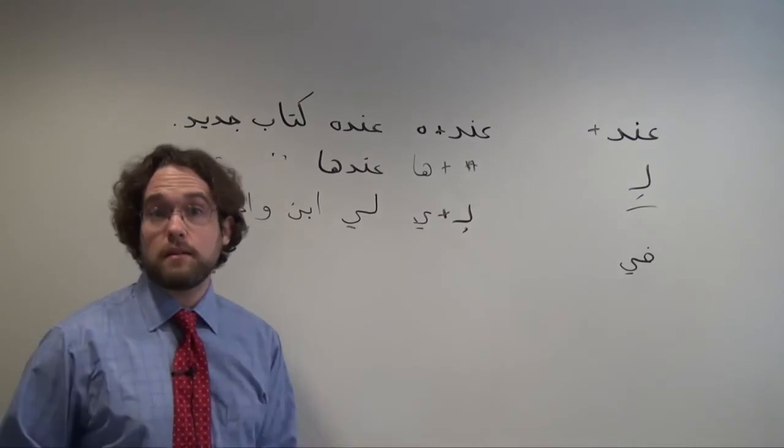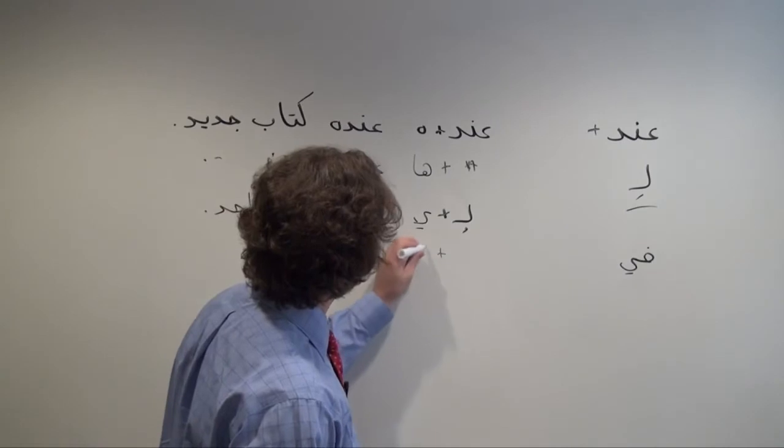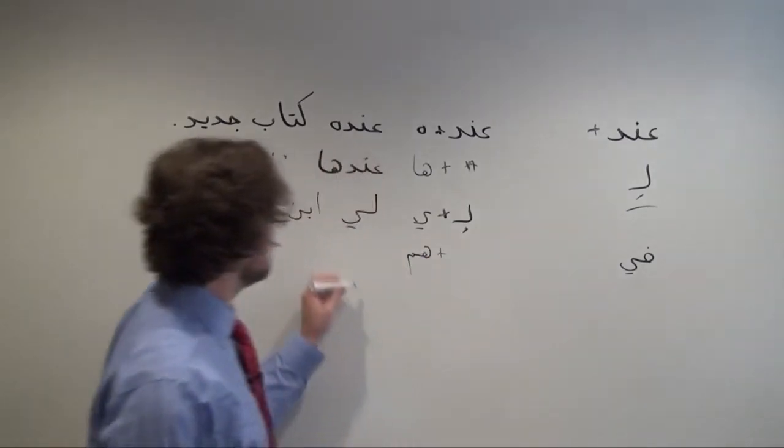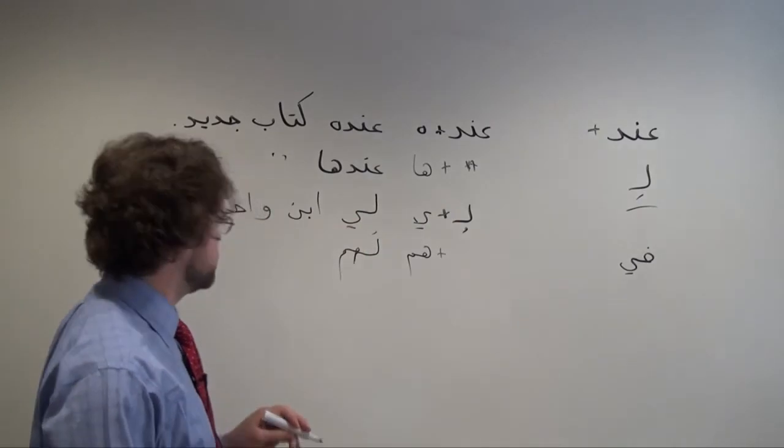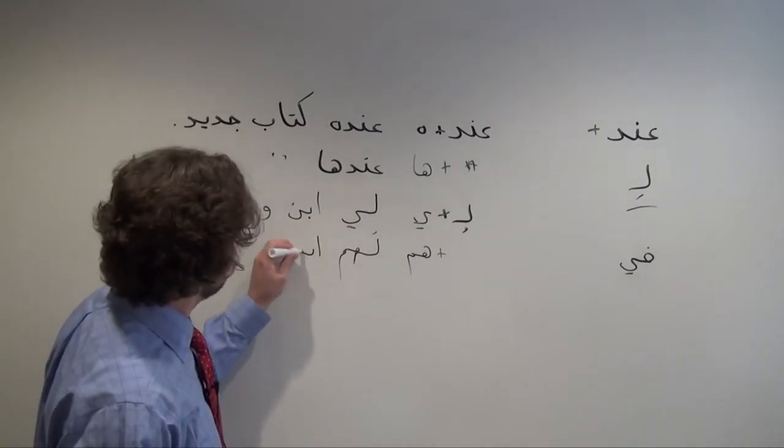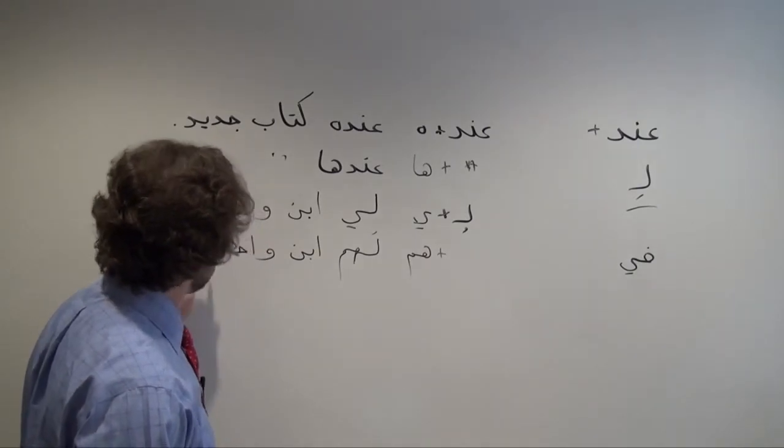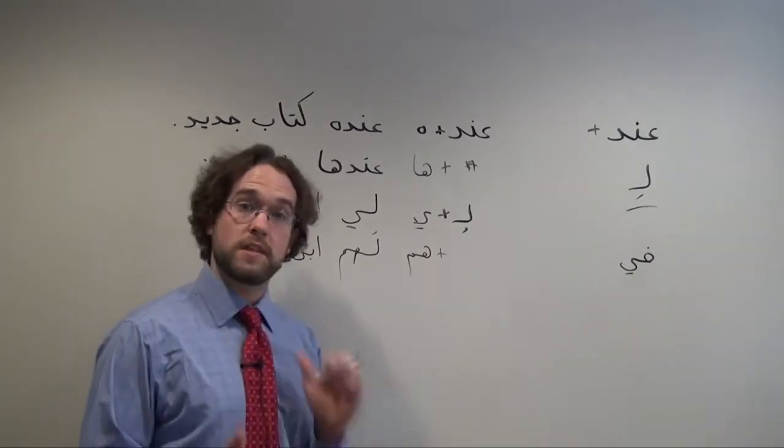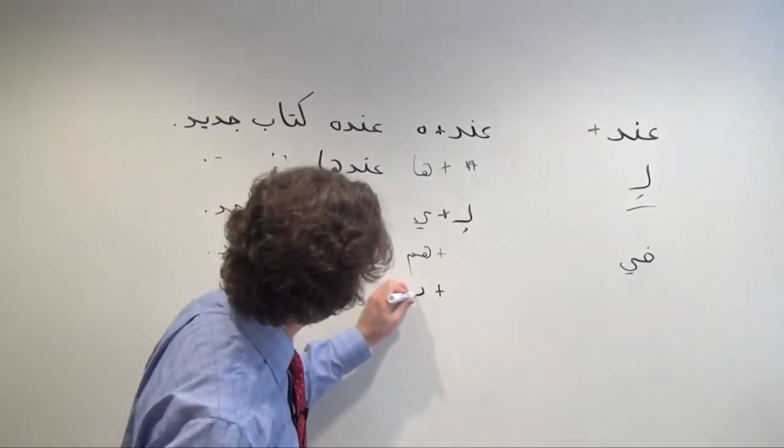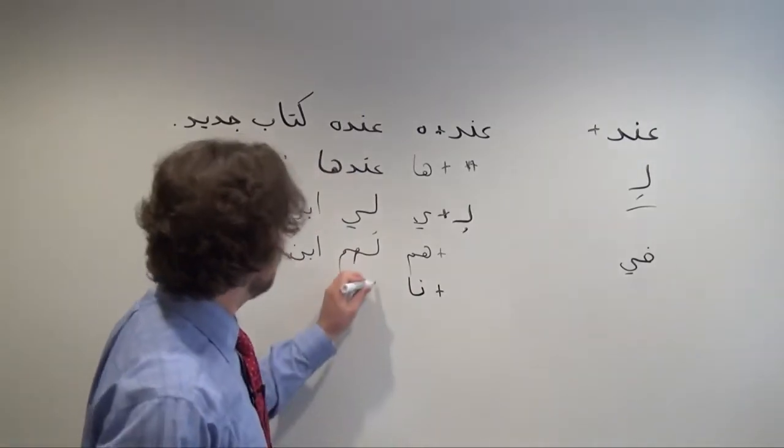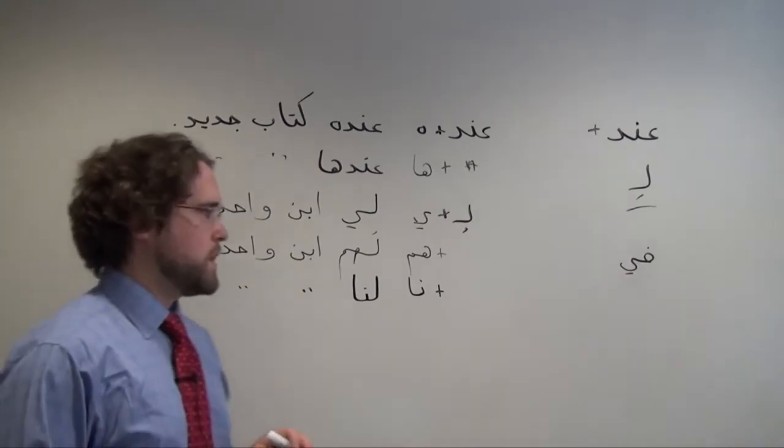If I wanted to say they have one son, that will change a little bit. Instead we add هم, right? لهم ابن واحد. Or if I want to say we have one son, instead I would take that نحنو suffix, نون ألف, and wind up with لَنَا ابن واحد.